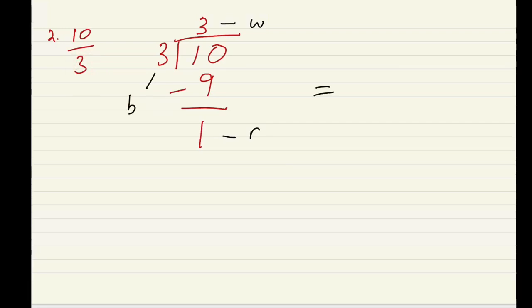So when we're writing the answer, we're starting with the whole number remember. So it becomes 3 whole, then the remainder follows which is 1 in this case, 1 followed by the bottom number which is 3. This is the 3 I'm referring to, this one that was in the bottom. So let's move to the next question.